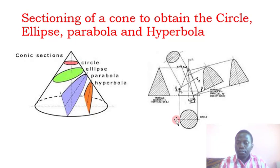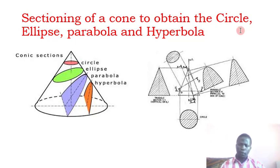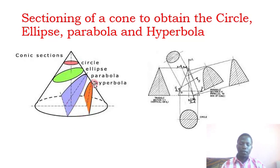We also need to know the sectioning of the cone itself to obtain the conic shaped figures: the circle, the ellipse, the parabola, and the hyperbola. When you look at this drawing, you see a cone standing on its base. When you cut the cone parallel to the base surface you obtain a circle. When you cut the cone at any slanting angle, not parallel to the base, you obtain the ellipse.